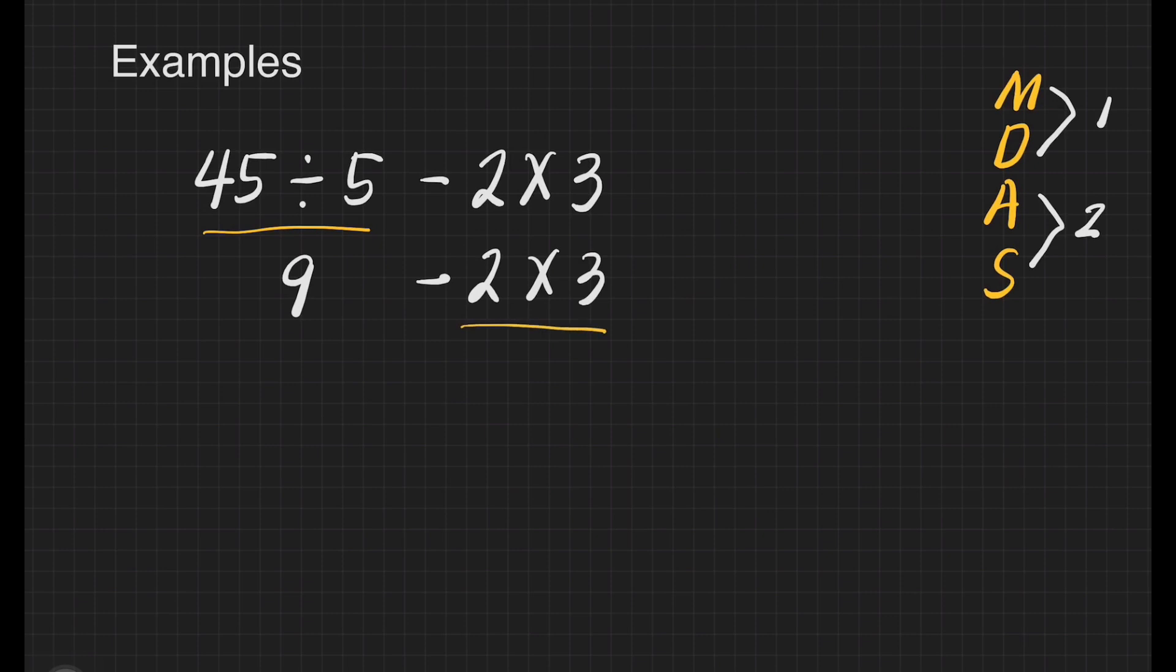2 times 3 equals 6. Then we copy 9 and the subtraction sign. Now we can subtract: 9 minus 6 equals 3. That's it.